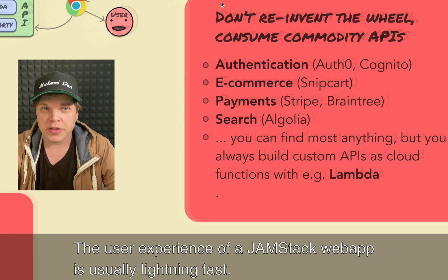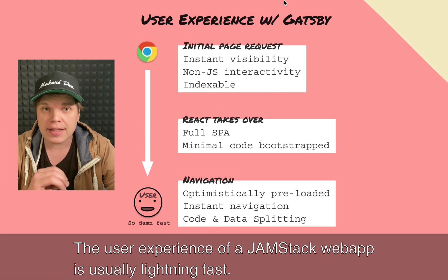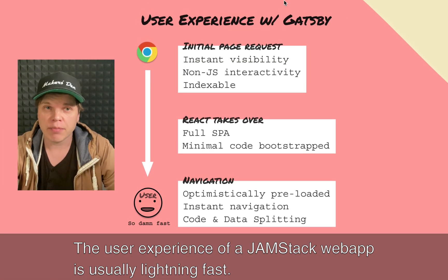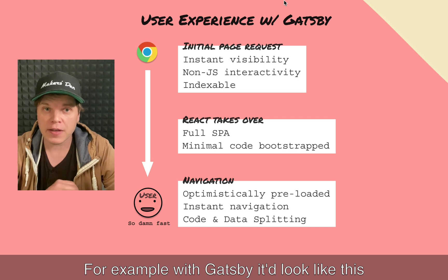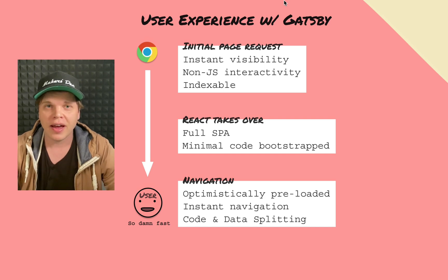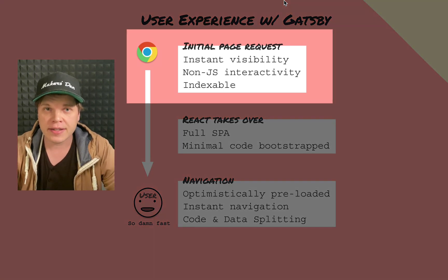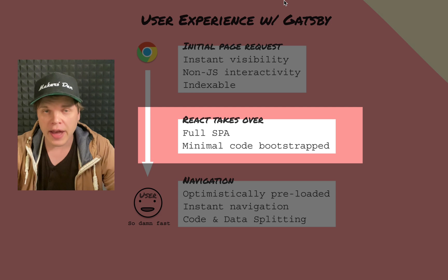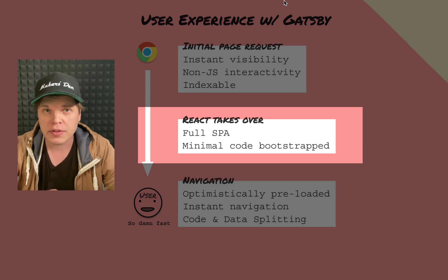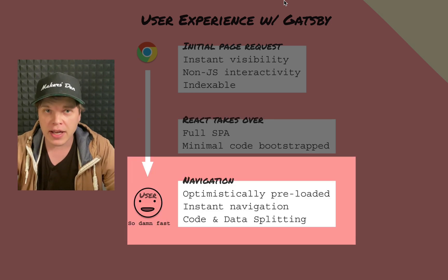The user experience of a JAMstack web app is usually lightning fast. For example, with Gatsby, it looks something like this. After the initial request, you get instant visibility and non-JavaScript interactivity, and it's fully indexable by search engines. Then React takes over, and you get a full single-page web application with minimal code bootstrapped. When navigating, any visible route is optimistically preloaded, giving you instant navigation.